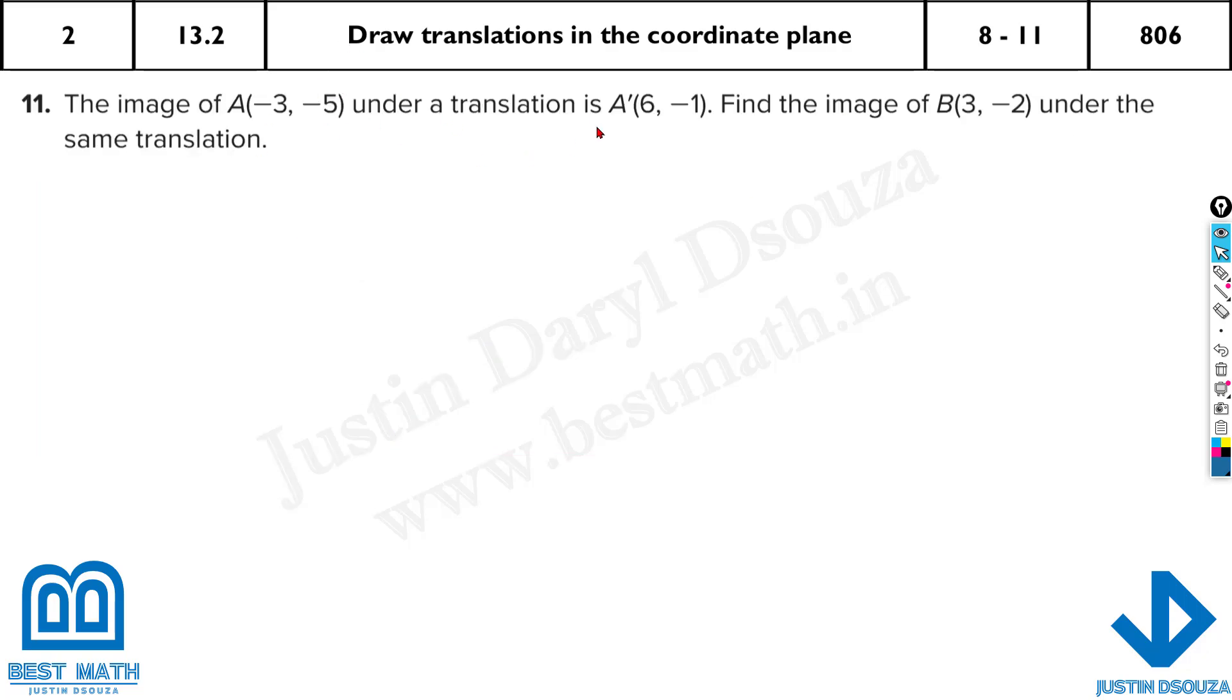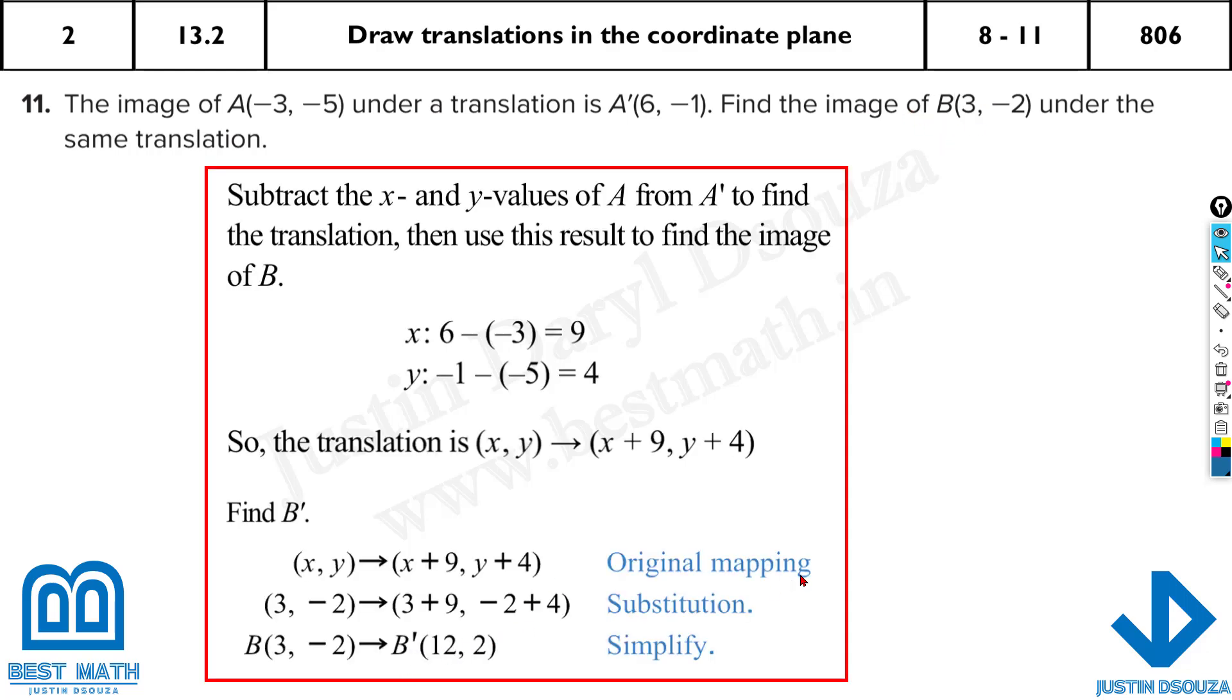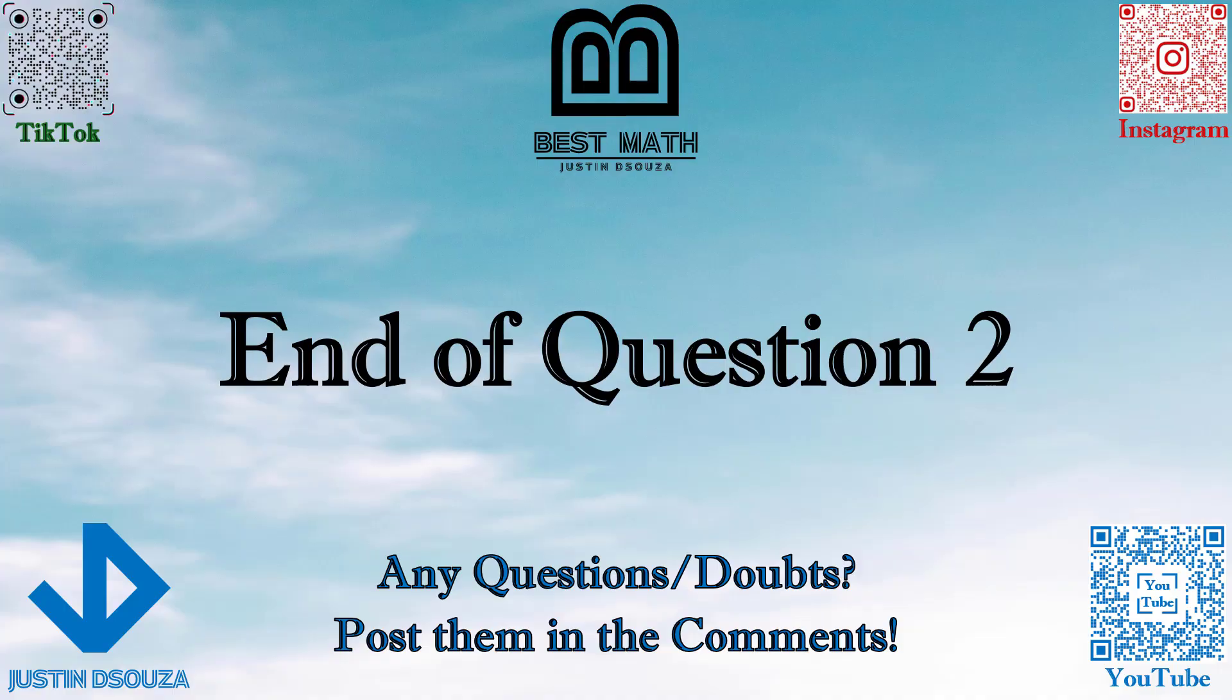And the same thing which we had done, first find the translation vector, and then add the translation vector to the point B to get B prime, that is 12, 2. That is the end of this question. I hope it is clear. If you have any doubts, please consider re-watching the video or posting your doubts in the comments. I hope you all will head on to the next video.